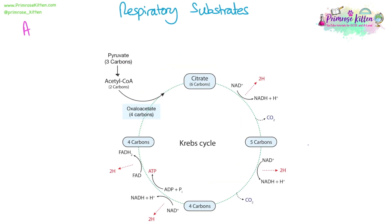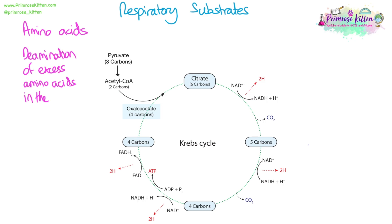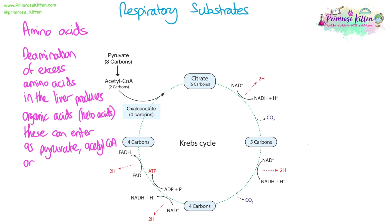Respiratory substrates. Amino acids can enter the Krebs cycle. If there are excess amino acids, they are deaminated in the liver and this produces organic acids or keto acids. These can enter as pyruvate, acetyl-CoA or oxaloacetate.